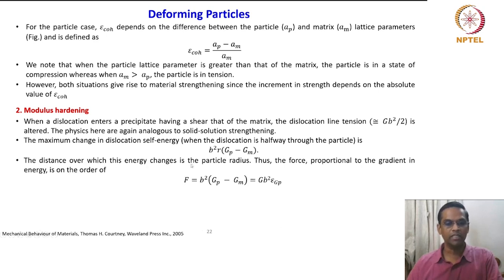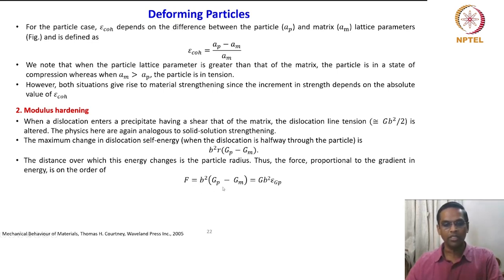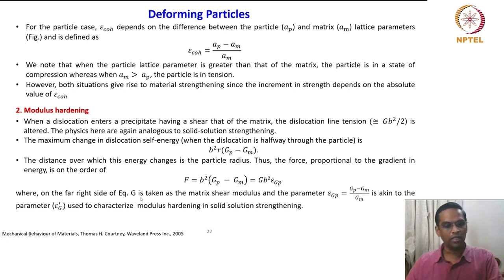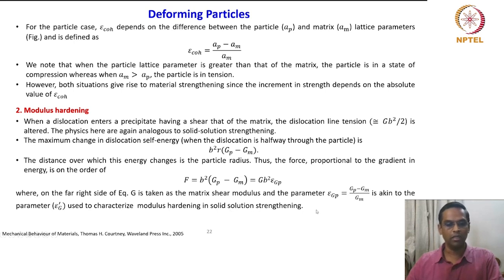The distance over which the energy changes is the particle radius. Thus, the force proportional to the gradient in energy is on the order of F equal to b² times (G_p minus G_m), which is nothing but G·b²·epsilon_Gp. On the far right side of the equation, G is taken as the matrix shear modulus, and the parameter epsilon_Gp equals (G_p minus G_m) / G_m — analogous to epsilon_G_prime used to characterize modulus hardening in solid solution strengthening.